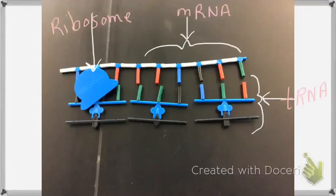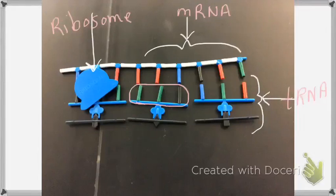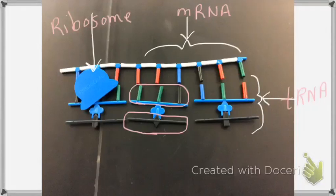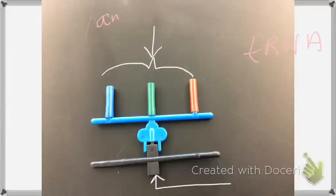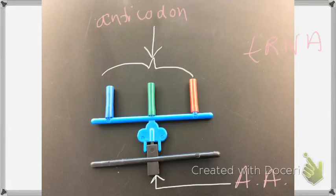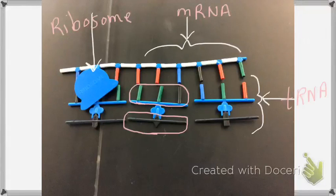On the tRNA, the three bases at the top are the anti-codon. The black thing at the bottom is an amino acid. Transfer RNA takes amino acids to the ribosome — you can see how the tRNA brings amino acids to the ribosome in this picture.